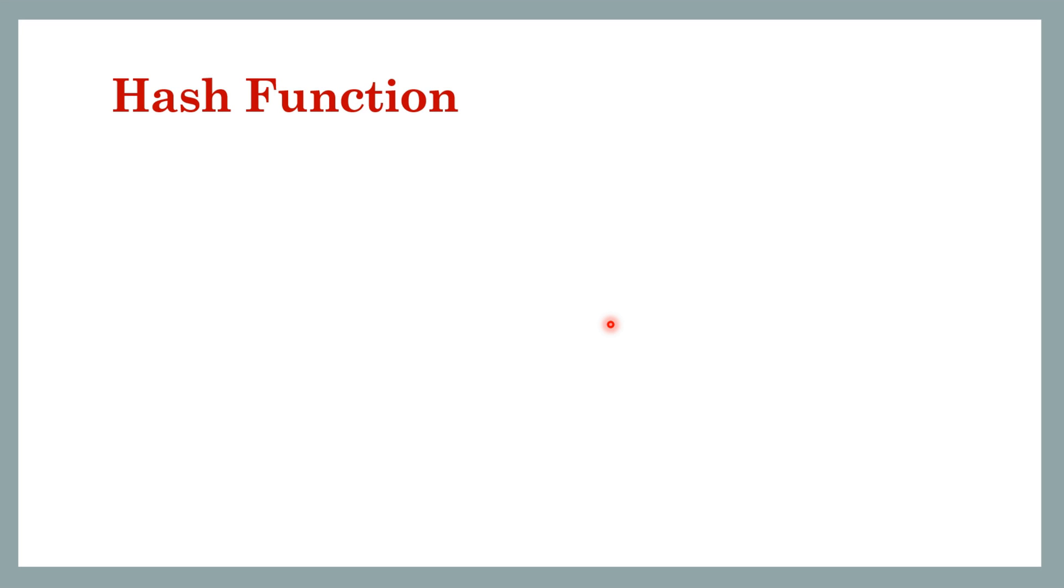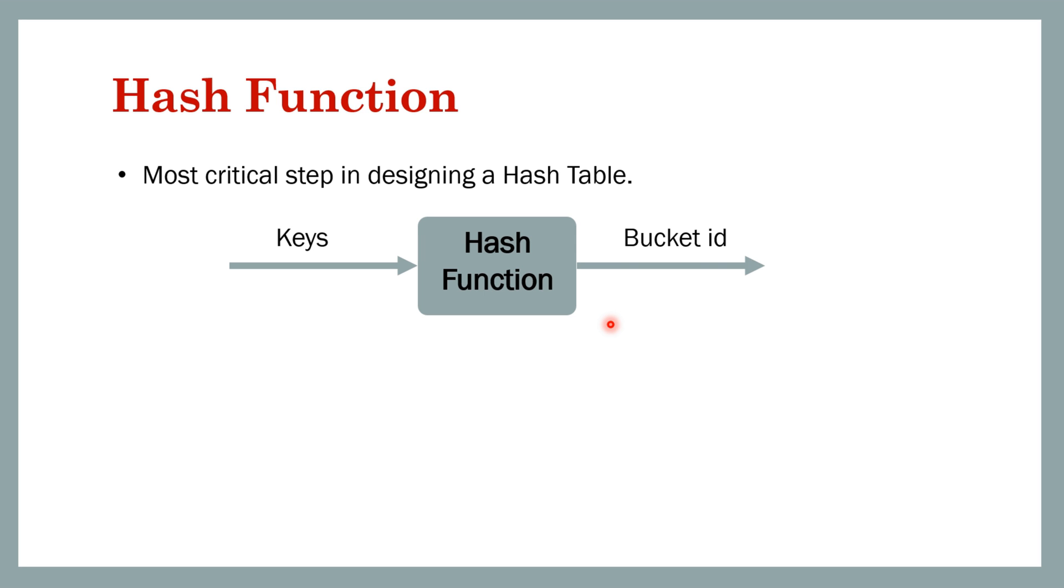The first component is the hash function, and this is the most critical step in designing a hash table. What a hash function does is it takes a key and it returns a bucket ID.